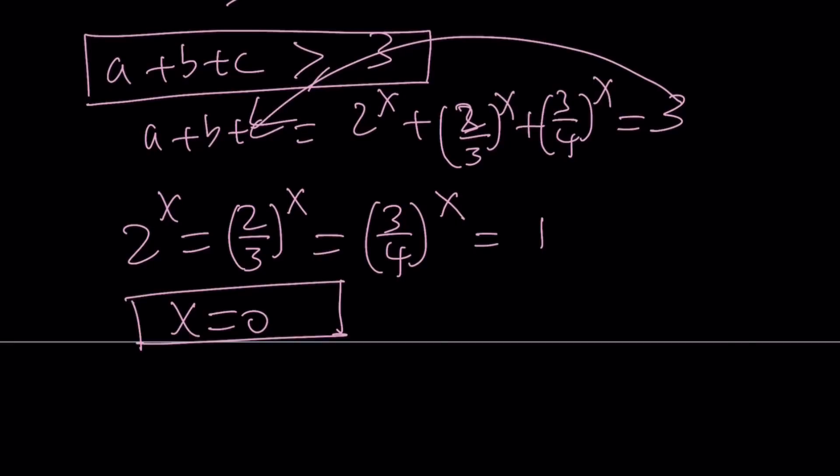So basically I kind of went over the proof of the AM-GM inequality for three numbers. And then we used it to solve this equation. And I'm going to show you the graph and what that looks like.